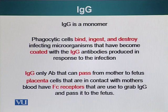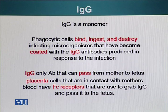Placental cells have special receptors that can bind IgG molecules, internalize them, and pass them on to the fetus.